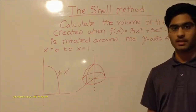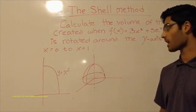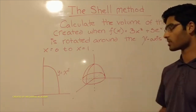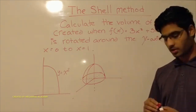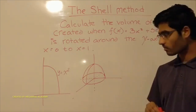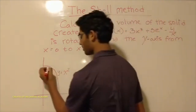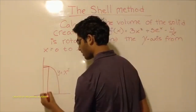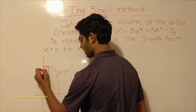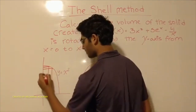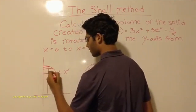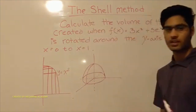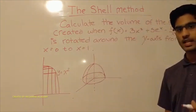So what is the shell method? First, let's figure out the formula before we start solving this problem. Essentially, what we do is create cylinders and then calculate the lateral surface areas of these cylinders and add them up.